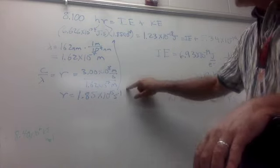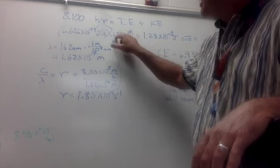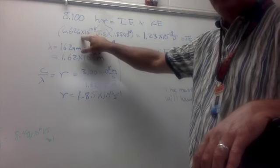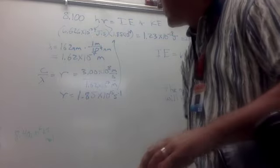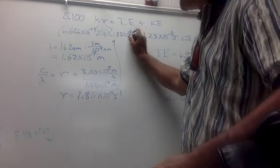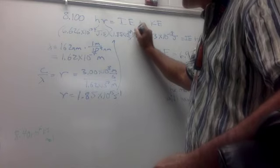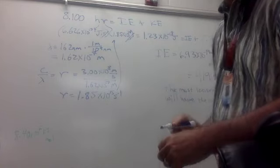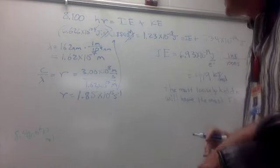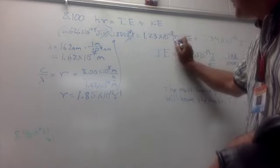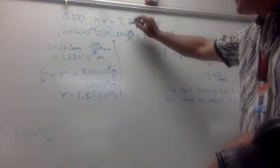So then plugging that back in and multiplying it by Planck's constant, 6.626 times 10 to the minus 34 joules seconds. Units of seconds are going to cancel out. Seconds to the minus 1 cancels seconds. I get 1.23 times 10 to the minus 18 joules is the energy of the photon of ultraviolet light.